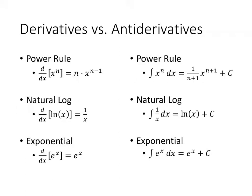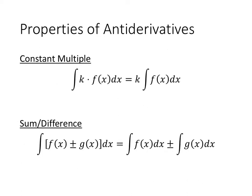Similarly, the derivative of the natural log of x is 1 over x, so the antiderivative of 1 over x is the natural log of x, plus c. The derivative of e to the x is e to the x, so the antiderivative of e to the x is e to the x, plus c. We also have constant multiple and sum and difference rules for antiderivatives, corresponding to those rules for derivatives.